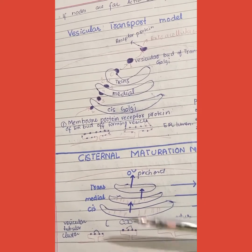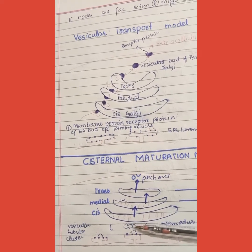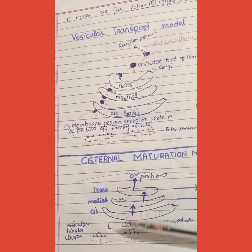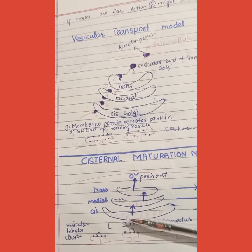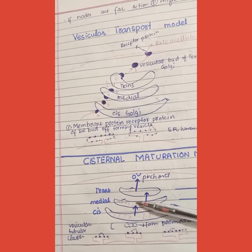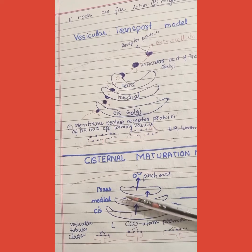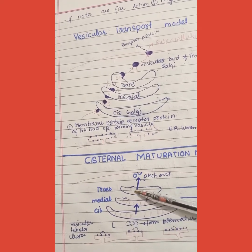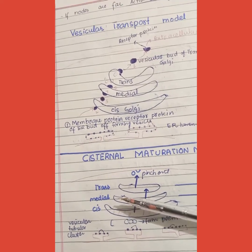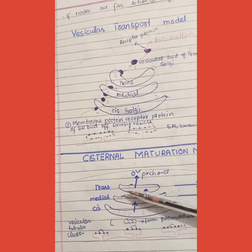After more vesicles are added, it becomes a proper cyst. Now we will have a cis cyst. The medial part becomes a cyst, and this cyst becomes medial. The trans is converted from medial.